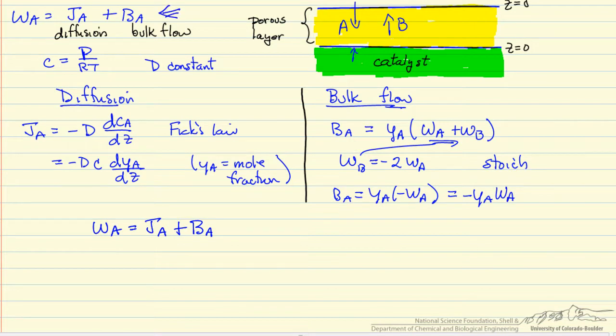that the total flux of A is this diffusion term plus the bulk flow term, so we're going to substitute the two terms, and that we determined here and here into the flux of A.